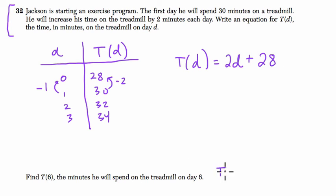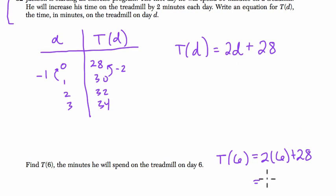And then find T of 6. So T of 6 equals 2 times D, or 6, plus 28. And it's 12 plus 28, or 40. So T of 6 is 40, and there will be 40 minutes on the treadmill.